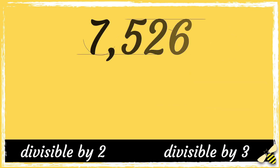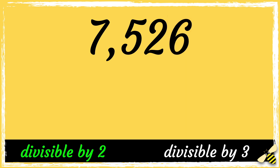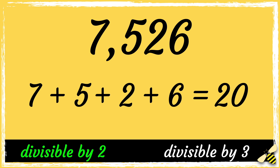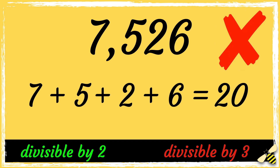Here's the number 7526. First let's see if this number is divisible by 2. 6 is an even number, so this number is divisible by 2. Now we need to see if it's divisible by 3. So let's add the digits in the number: 7 add 5 add 2 add 6 equals 20. 20 is not divisible by 3. So as this number is only divisible by 2 and not 3, it's not divisible by 6.